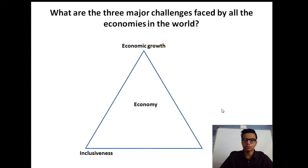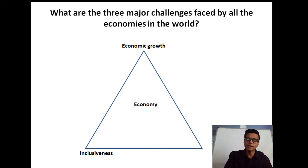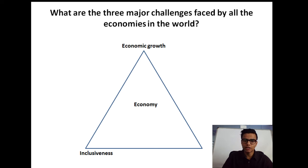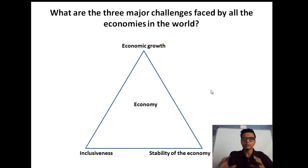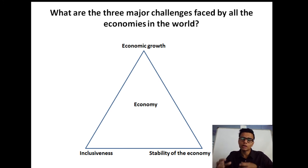Coming back to the three major challenges: the first was economic growth, the second was inclusiveness — whether growth is inclusive, reducing gaps between rich and poor, between rich and poor states, between regions within a state, and gender gaps. The third challenge is stability of the economy. Once you achieve economic growth and make sure it is inclusive, you need to ensure the economy is stable so that you can sustain that growth.